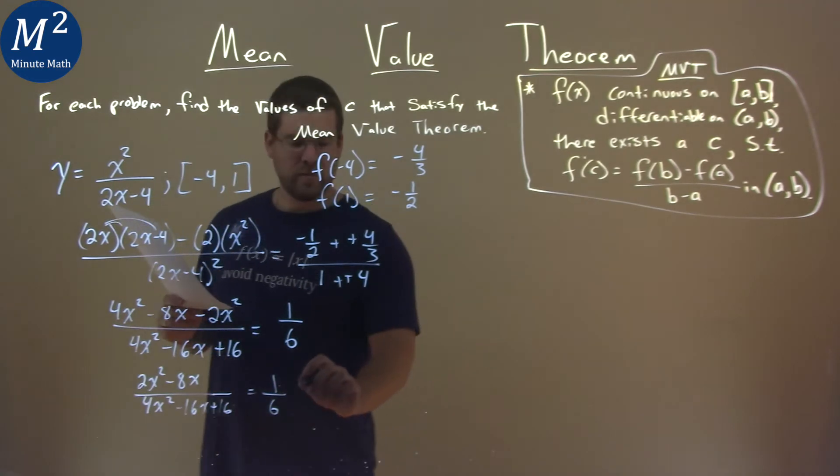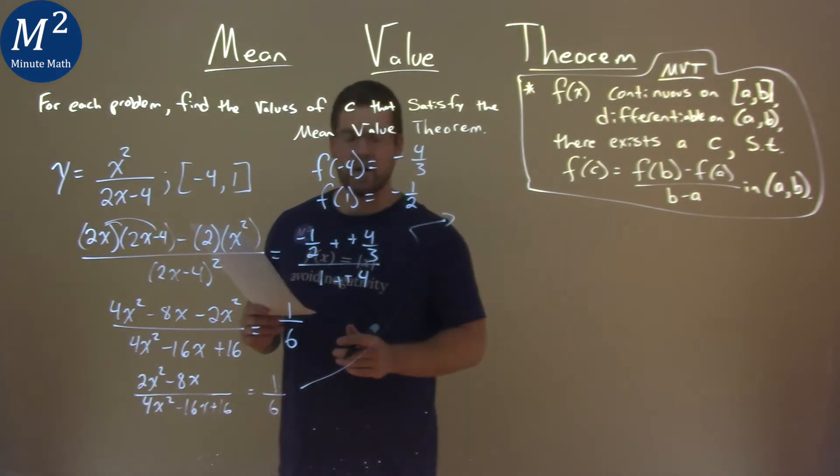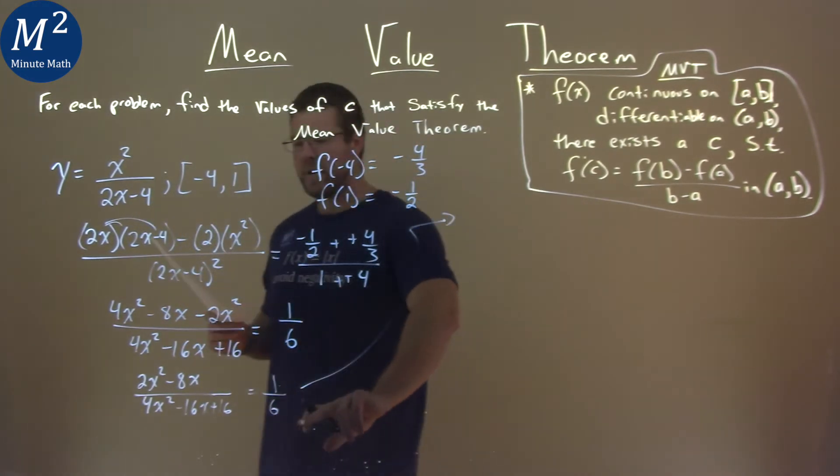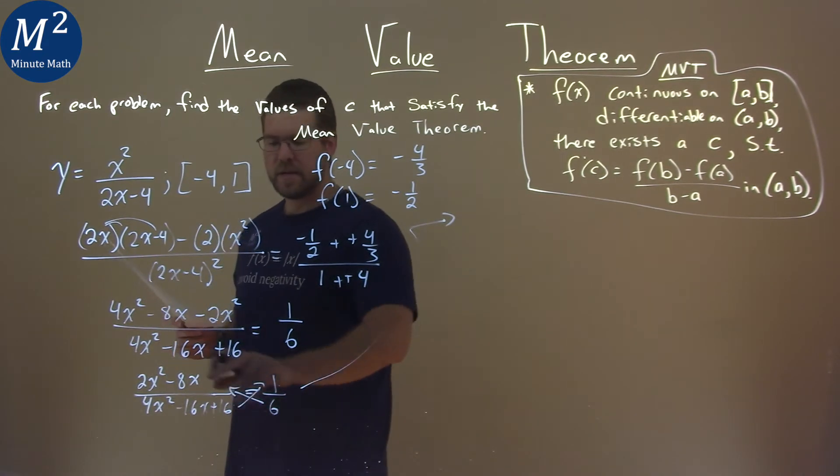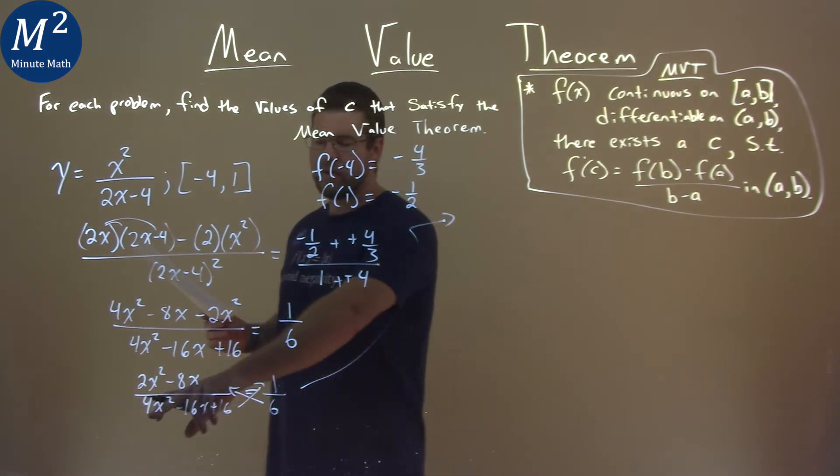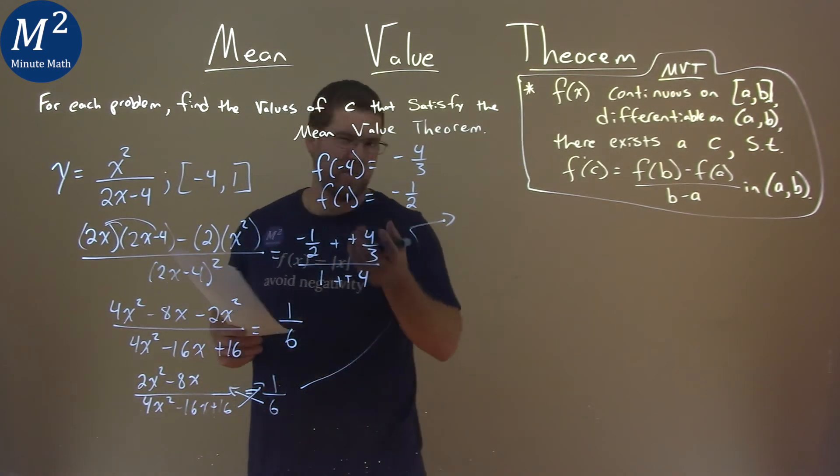And now, here is where I decide to cross-multiply. I multiply the 6 up here, and this function, 6 times the 2x squared minus 8x, and then 4x squared minus 16x plus 16 times the 1.